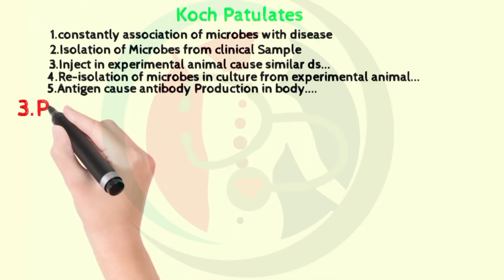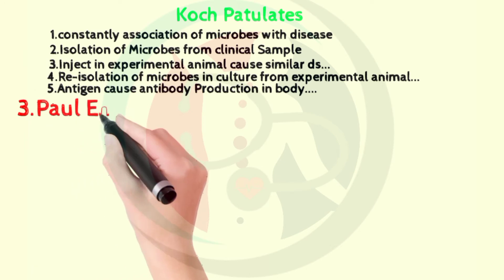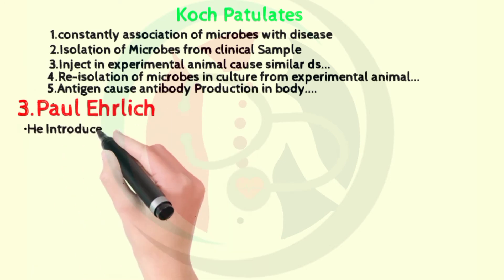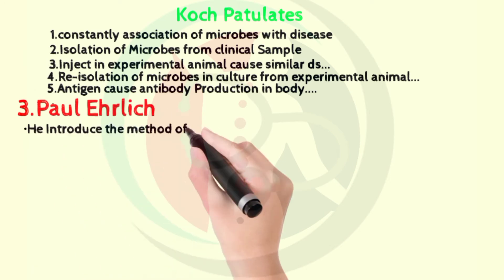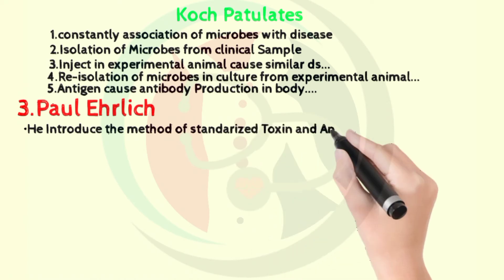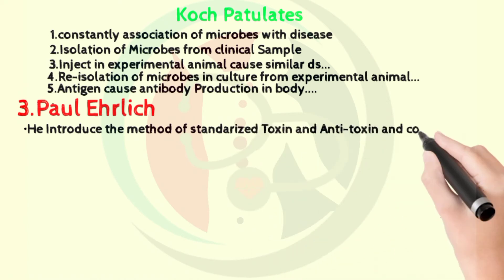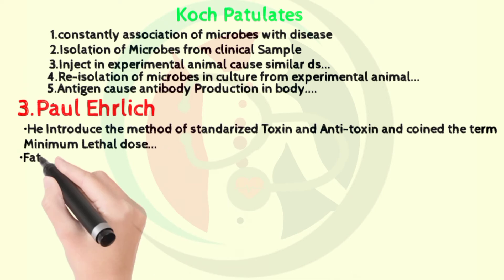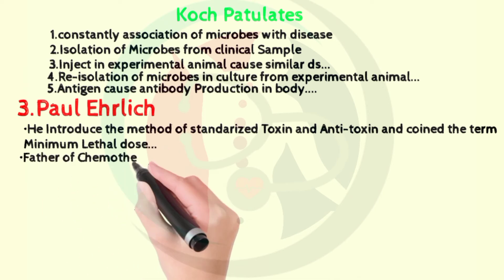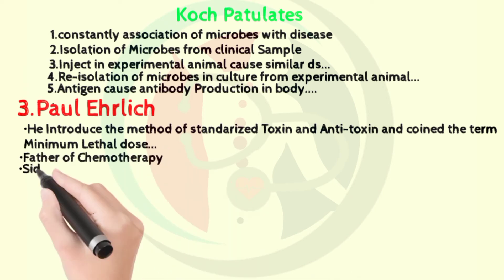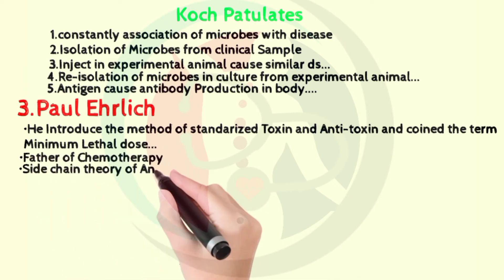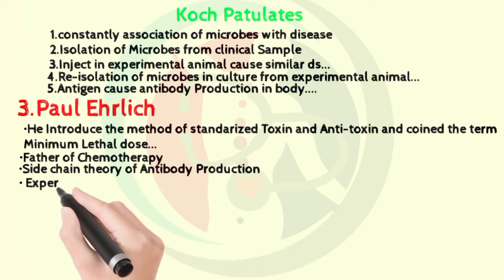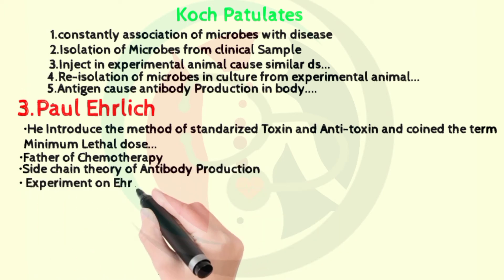Next we will study Paul Ehrlich. He introduced the method of standardized toxin and antitoxin and coined the term minimum lethal dose. He is also known as the father of chemotherapy and proposed the side chain theory of antibody production. He experimented on the Ehrlichia group of microorganisms. He also reported that tubercle bacillus are acid fast.